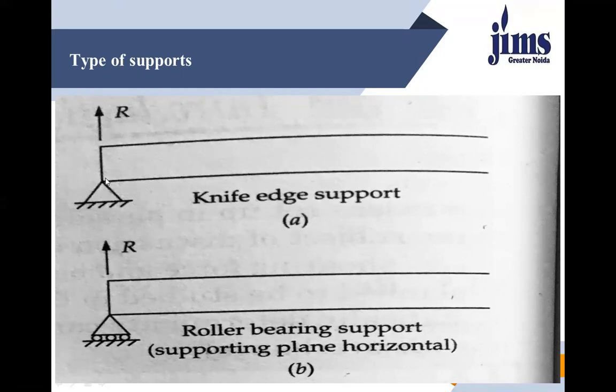In terms of reactions for a simply supported beam: vertical reaction is non-zero, horizontal reaction is zero, and bending moment reaction is also zero. In terms of deflection: horizontal deflection and slope are non-zero, while vertical deflection is zero.